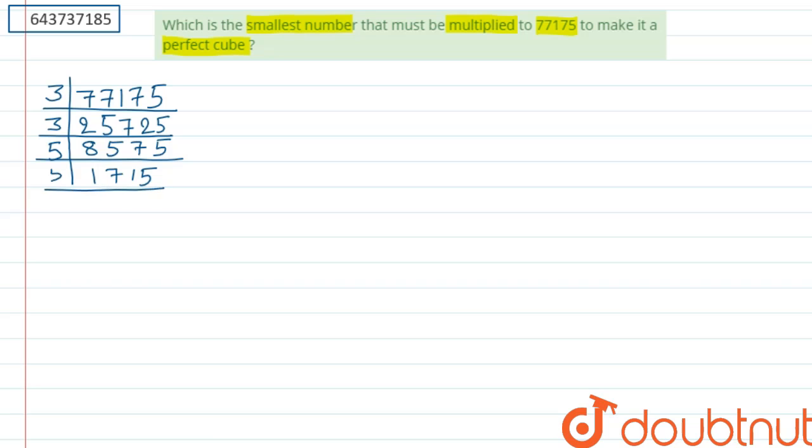Again, unit place is 5, so divide it with 5. We get 343.